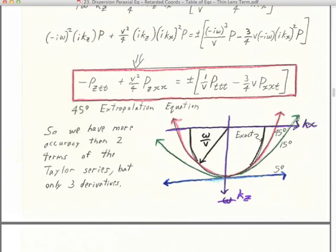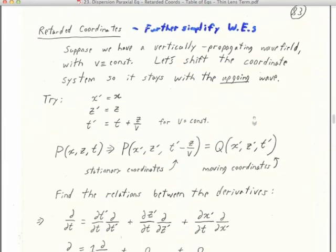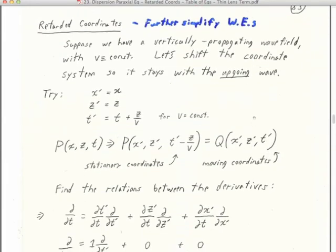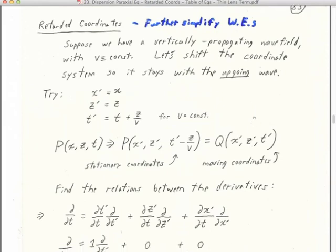This has four terms for us to put through finite differencing. We'd like to reduce the number of terms insofar as possible. So, given that we're using up-going waves and paraxial wave equations, there's this concept of using what are called retarded coordinates. We make the coordinate system itself follow the wave up, and in that way we can lose one of those four terms and only have three terms to finite difference.